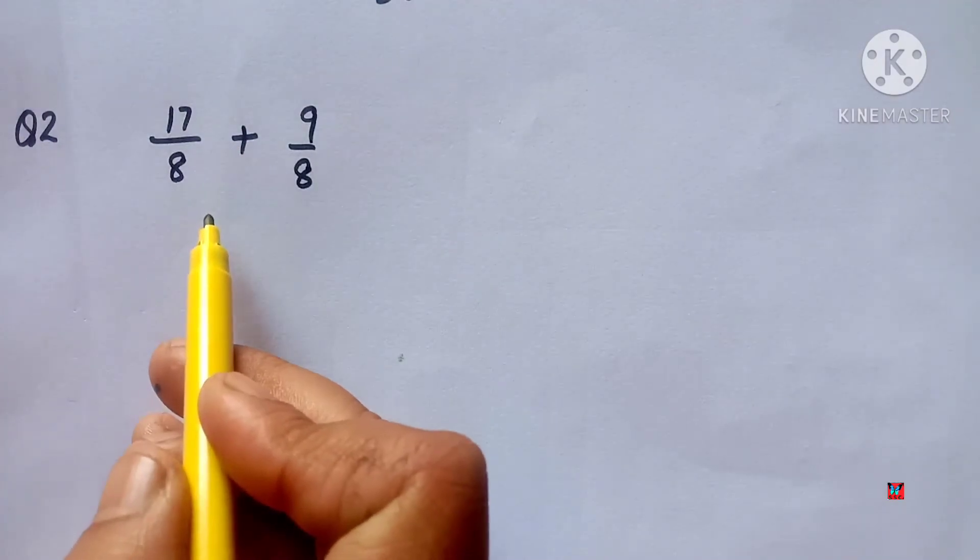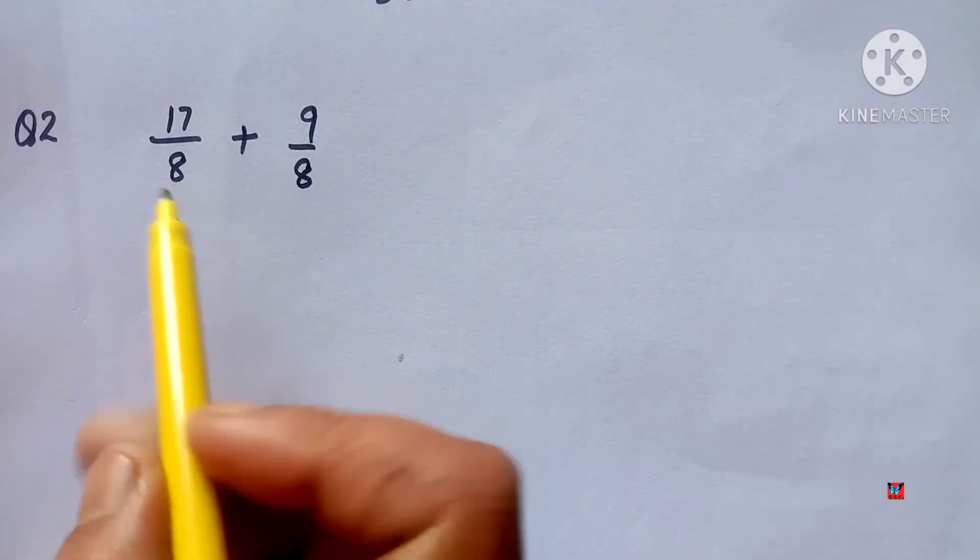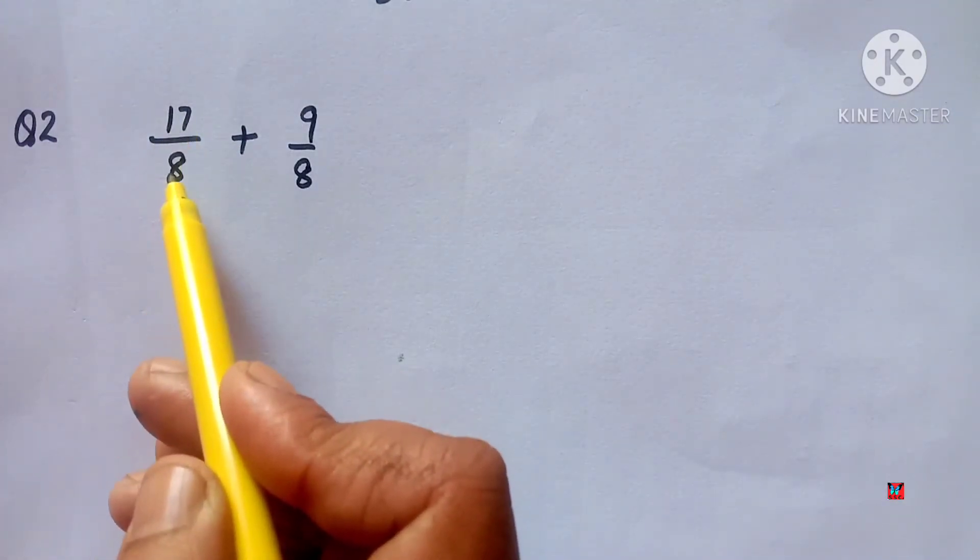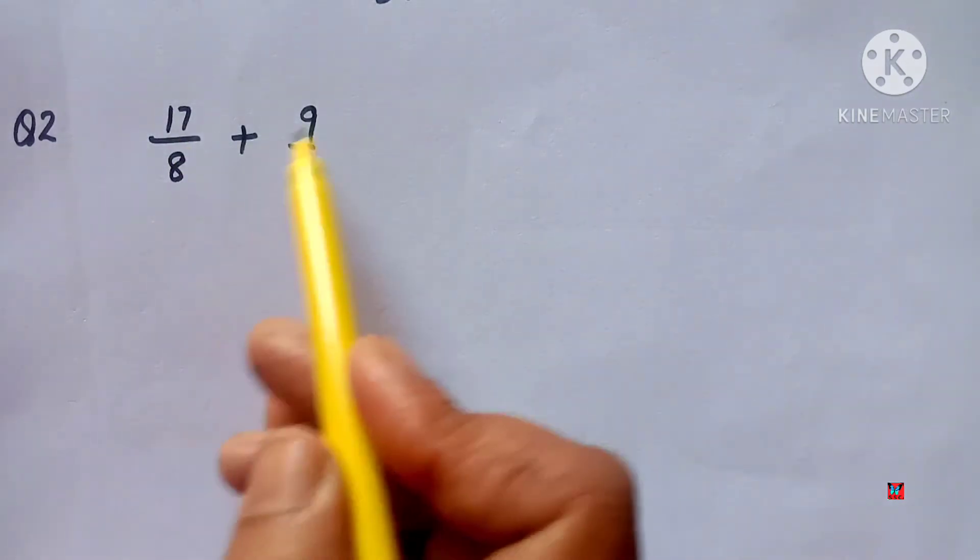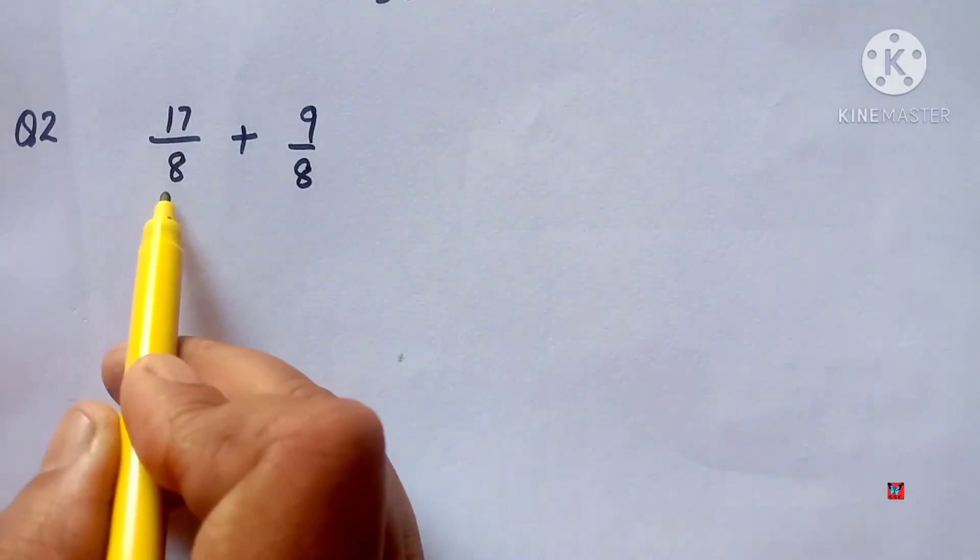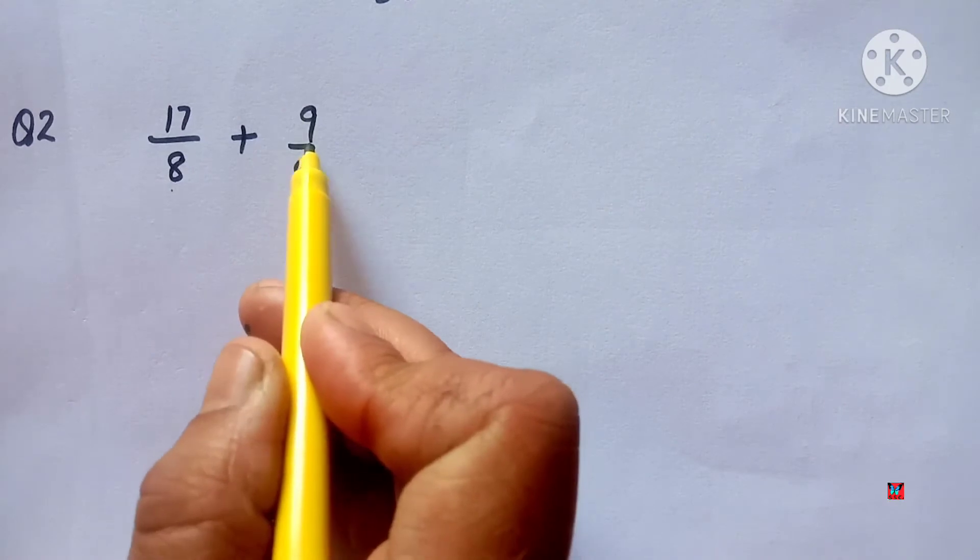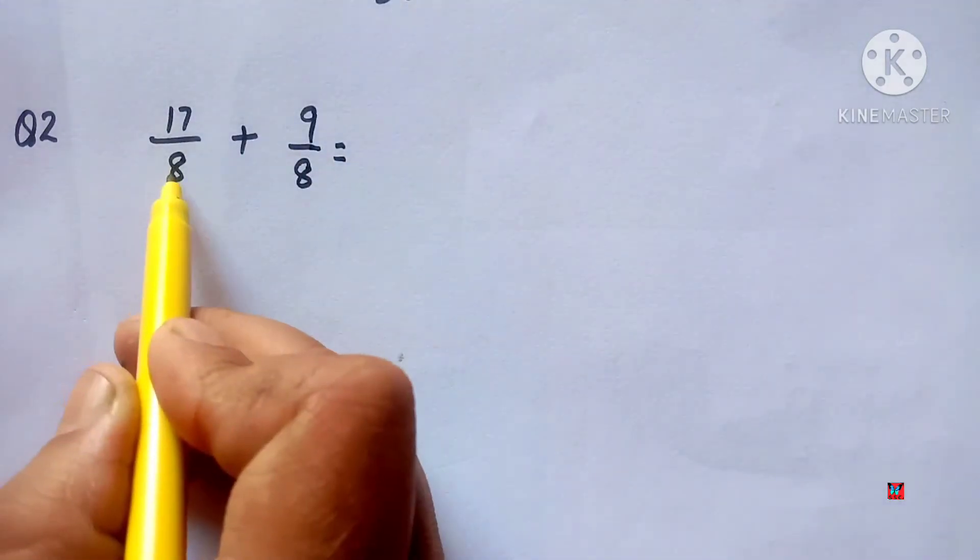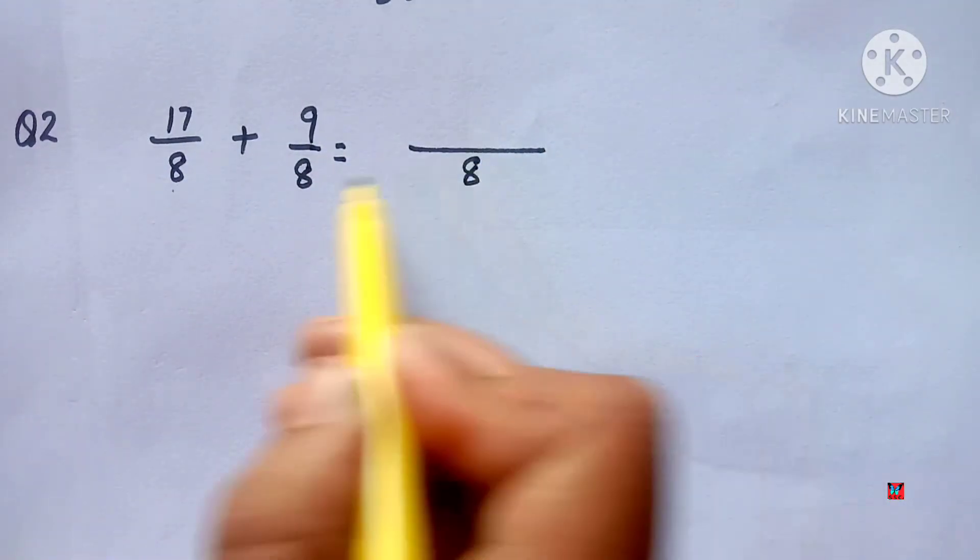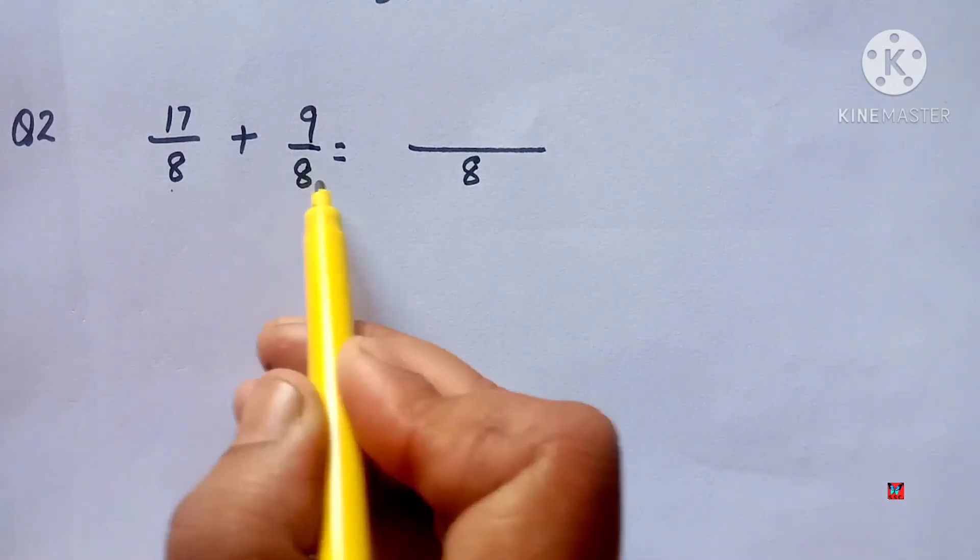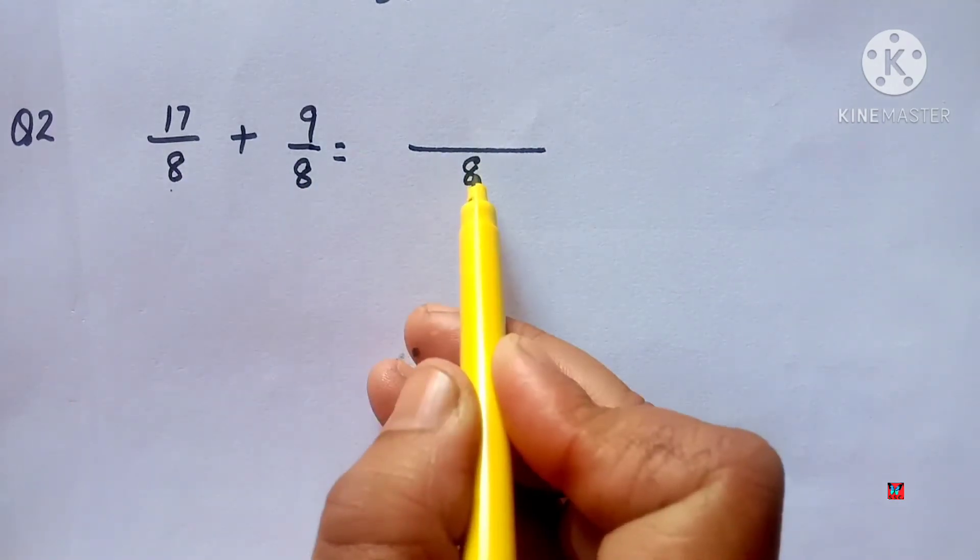Question 2: 17/8 + 9/8. When denominators are the same, you don't take LCM. This question can be done in a short way. Denominator as it is, LCM of 8 and 8 is 8 anyway.